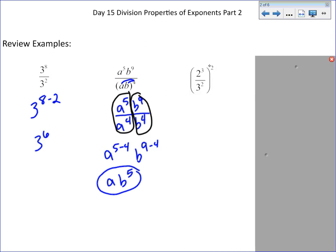Another example we did was when you have division, but that entire fraction is being raised to a power, and what we did is the exponent then distributes to both the top and the bottom, so we end up with 2 to the 3rd to the 2nd power over 3 to the 2nd to the 2nd power.